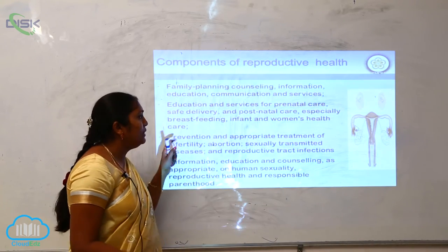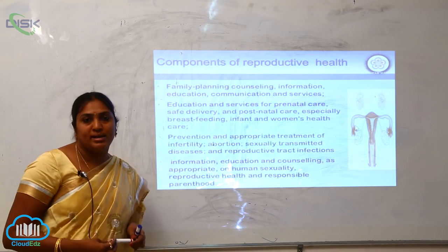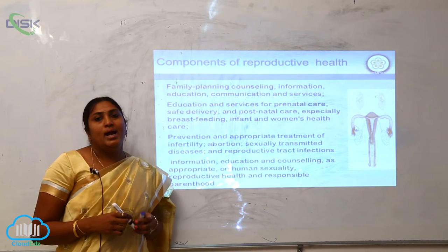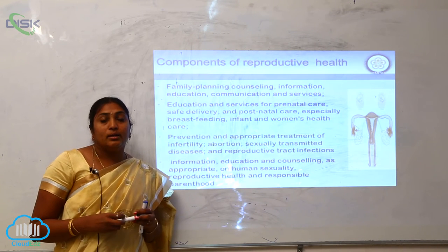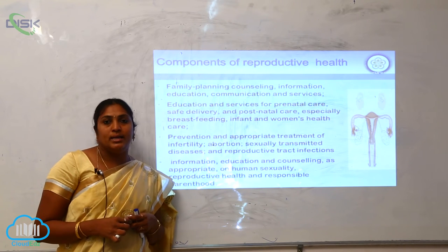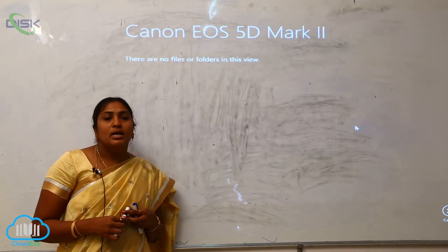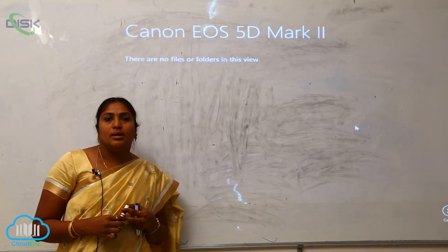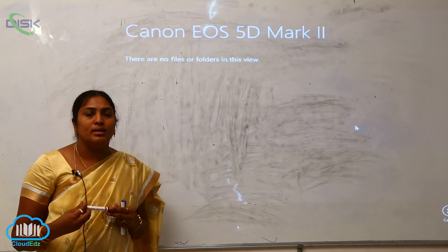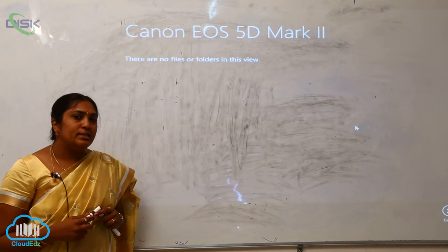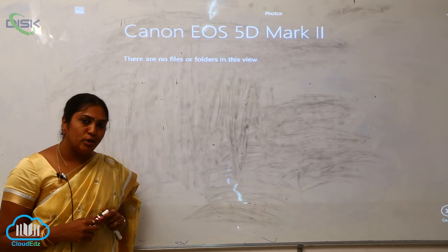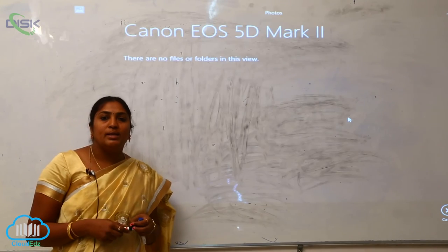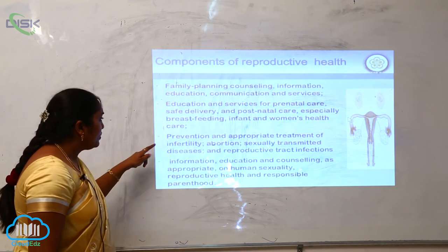Infant and women's healthcare — how to take care of infants and also the mother. Care must be taken for both the mother and the child. For this reason, the marriage age has been fixed at 18 years for females and 21 years for males. This has been mandated by the government and must be strictly adopted. If any child marriages occur, strict actions will be taken by the Government of India.